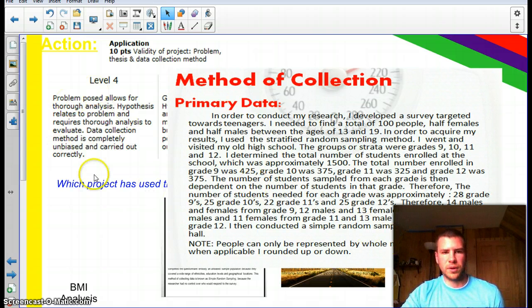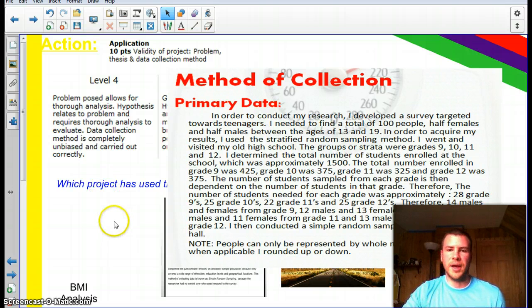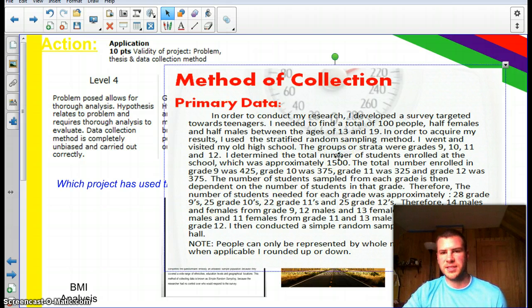And so in fact, this does fit into a level 4 category because this student went to a high school. In particular, it was their old high school. But it could be any high school in your case, or a mall, or any other area. And of course, a certain number of males and females from each grade were chosen. And so if you look at the way that that's explained, of course, in great detail, how each of those students were polled.